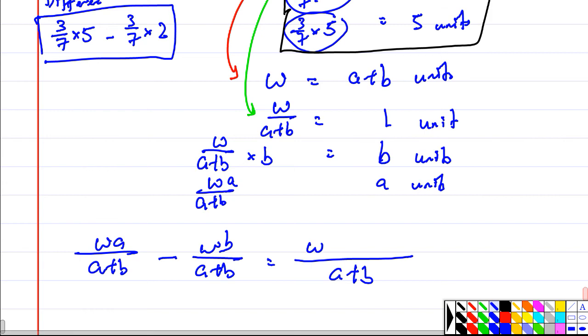Into one single fraction: W(A minus B) over (A plus B). This is the two marks.